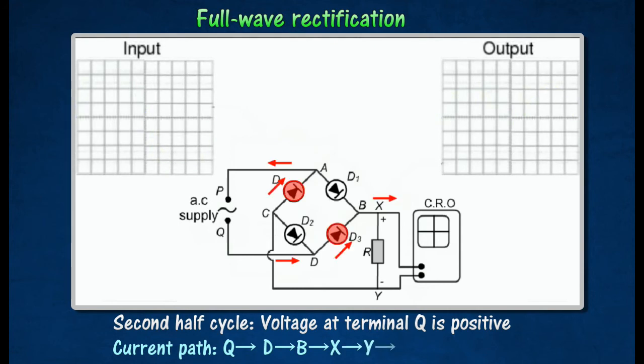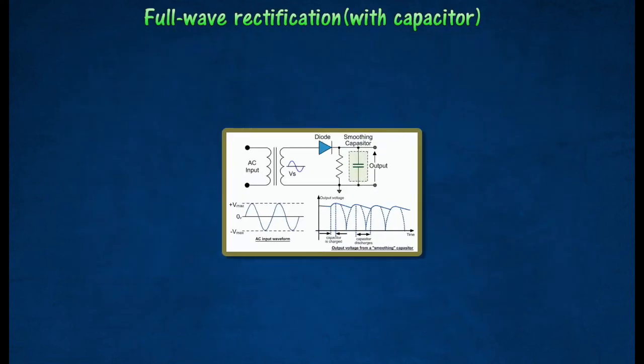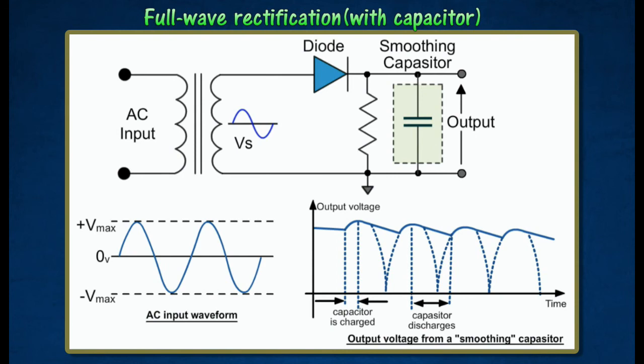Thus, a direct current voltage is produced across the load resistor since current flows in one direction only for both the first and second half cycles. The pulsing current from a rectifier can be smoothened with a capacitor parallel to the resistor as shown in the diagram.